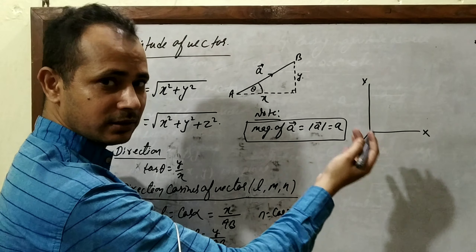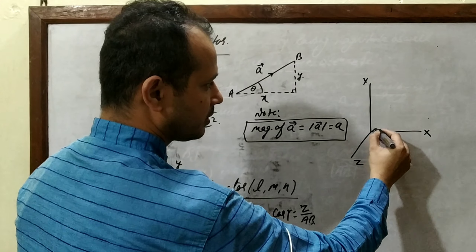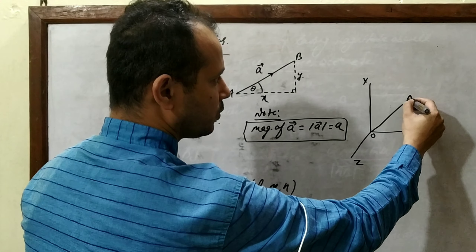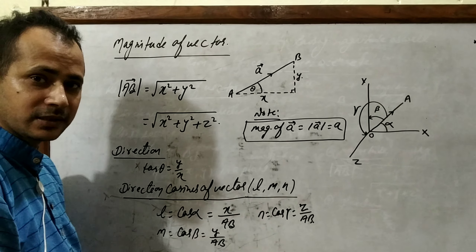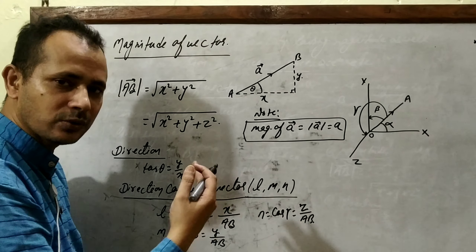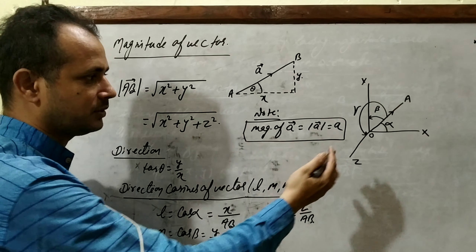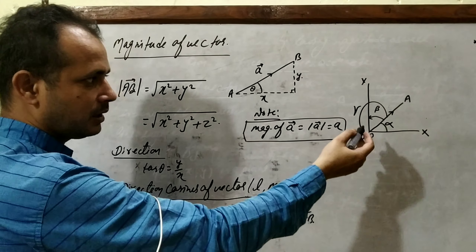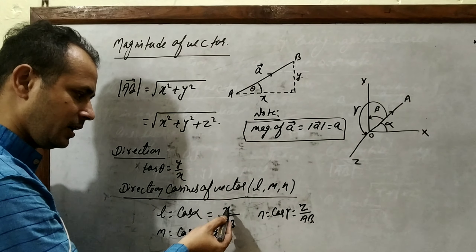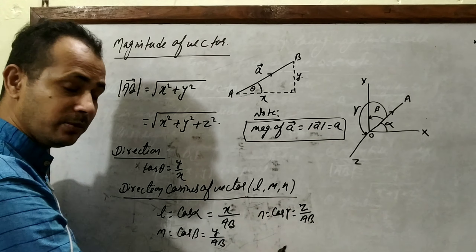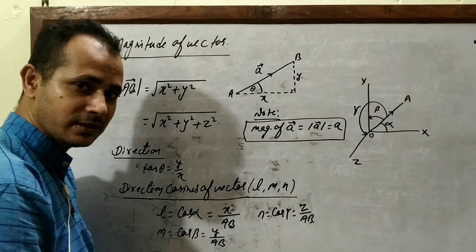In 3D space, if a vector OA is drawn, alpha, beta, and gamma are the direction angles. When we calculate their cosines, they are the direction cosines of vector OA. These direction cosines can be obtained using the formulas x/|AB|, y/|AB|, z/|AB|, denoted by l, m, and n.